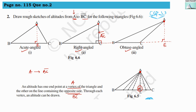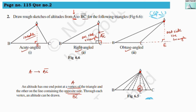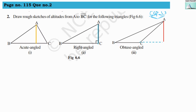For the acute angle triangle, the altitude is inside the triangle. For the right angle triangle, the altitude is on the triangle itself. For the obtuse angle triangle, the altitude is outside the triangle. So: for acute angle triangle AE is the altitude, for right angle triangle AC is the altitude, and for obtuse angle triangle AD is the altitude.